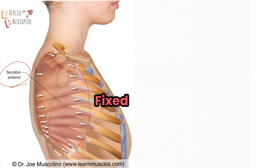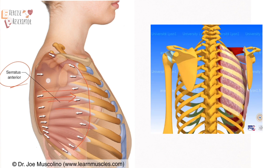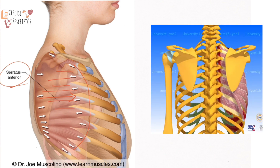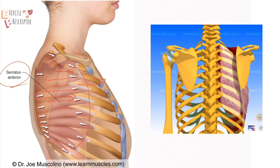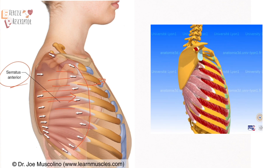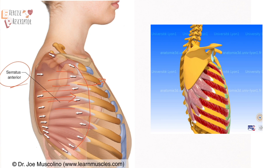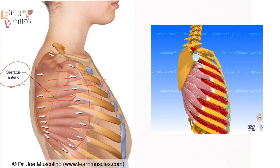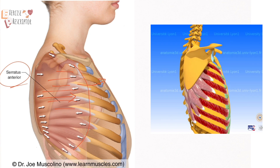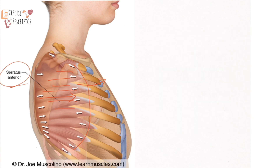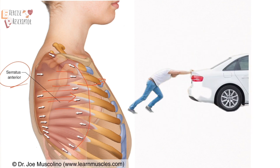Consider the rib attachment is fixed and the scapula attachment is moving towards the rib attachment. Most of the fibers are running horizontally, so when they contract, they pull the scapula forward, producing the movement of protraction of the scapula. Protraction is most important when you are pushing something, punching, or reaching forward with your upper extremity.